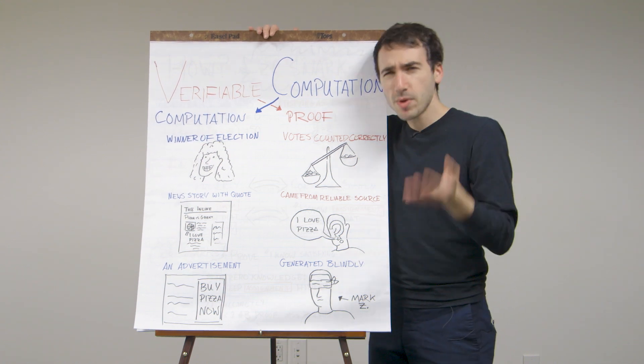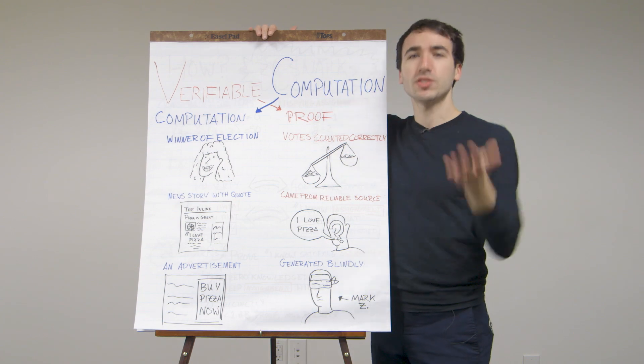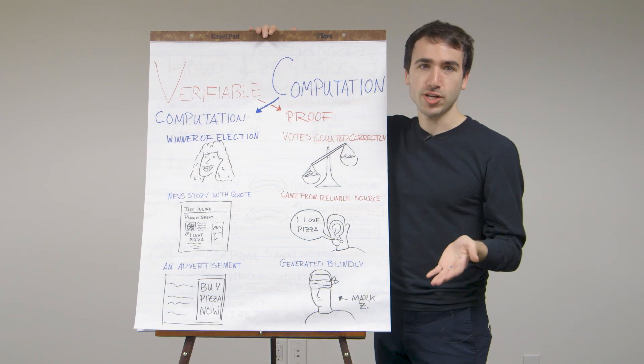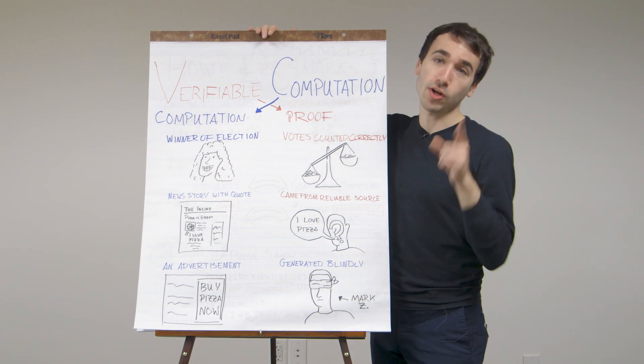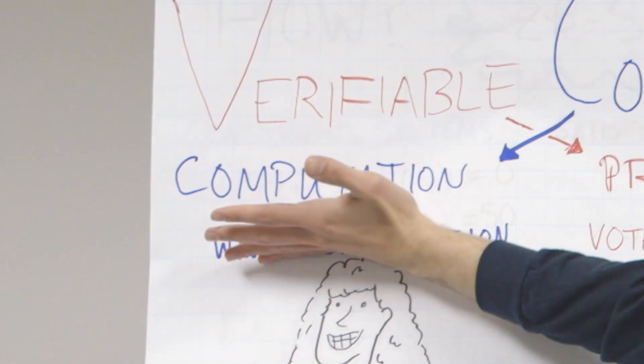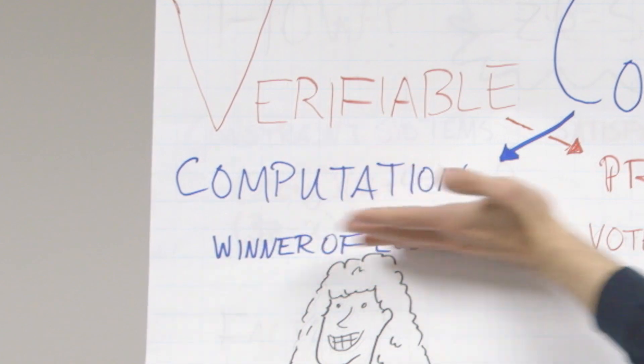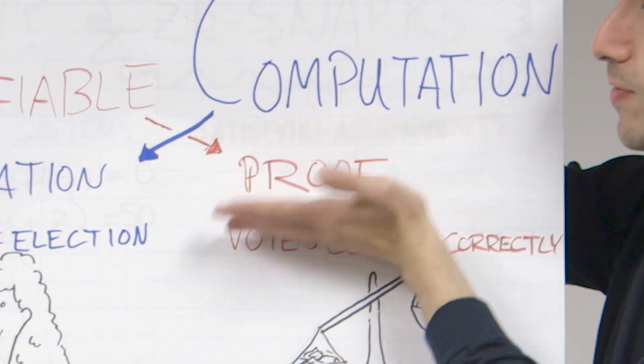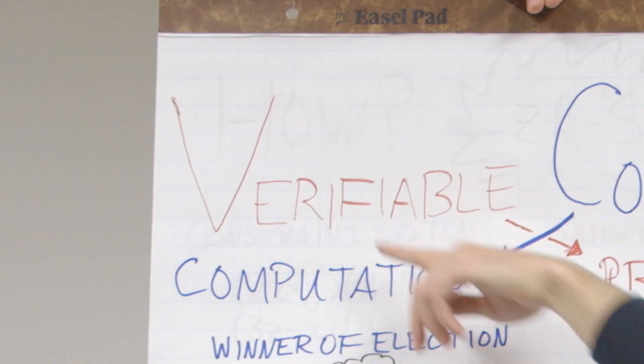You might be wondering, what is a verifiable computation anyway? Well, it's two things: it's a computation and a proof, so that the computation is verifiable.